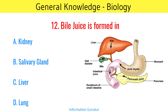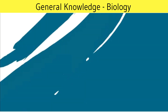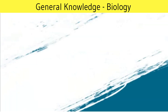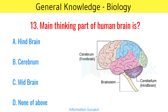Bile juice is formed in the liver. The main thinking part of the human brain is the cerebrum.